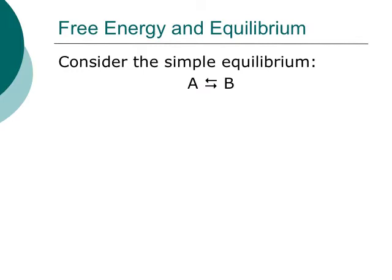Let's look at the general situation of A going to form B. If we were to do a free energy diagram with free energy on the y-axis and time on the x-axis, and A and B are in equilibrium with one another, what does that mean with respect to their relative free energies? If A has a certain amount of free energy, and A and B are in equilibrium, where do we put B — below A, above A, or right at the level of A?